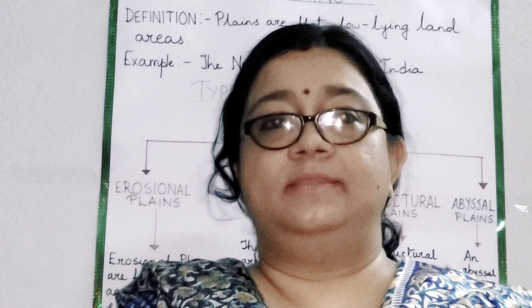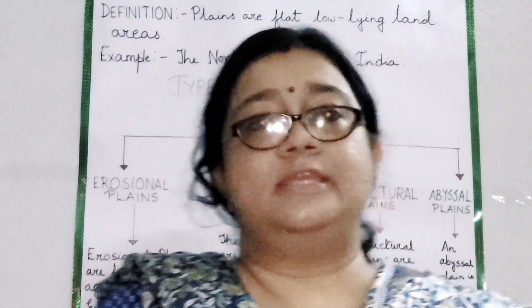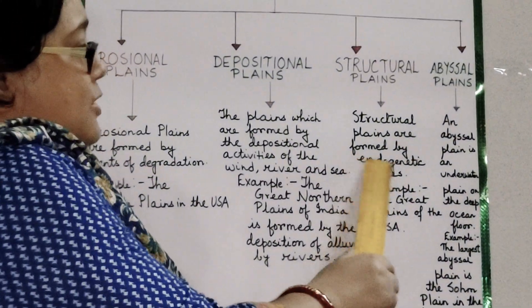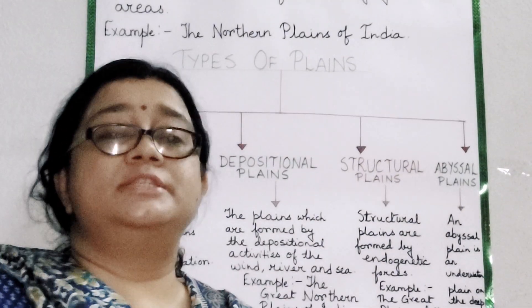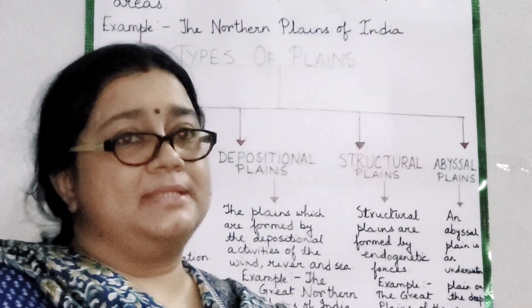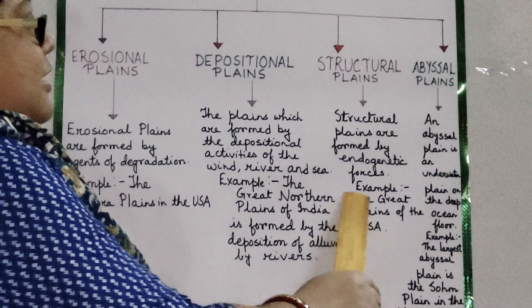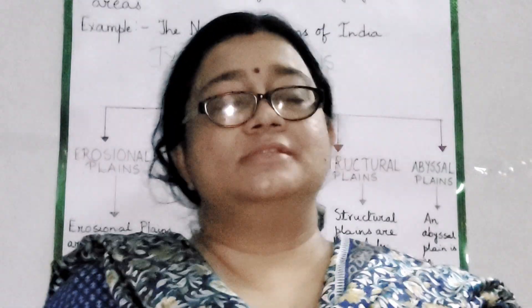The third type is the Structural Plain. How are structural plains formed? Structural plains are formed by endogenetic forces — the forces which are acting inside the earth. An example is the Great Plains of the USA. Structural plains are the most structurally depressed areas of the earth's surface and they give some of the most extensive natural lowlands on the earth's surface.